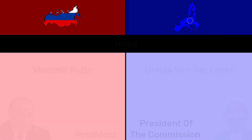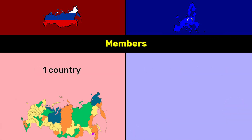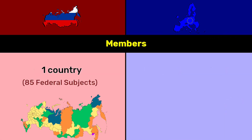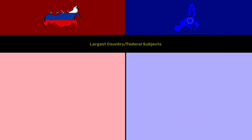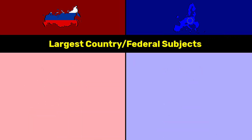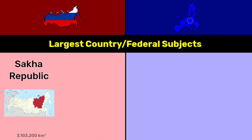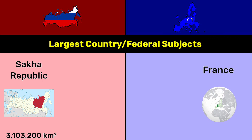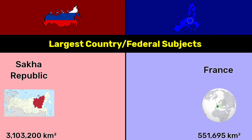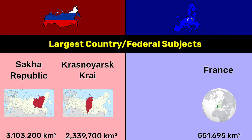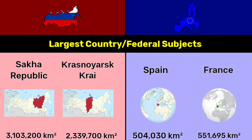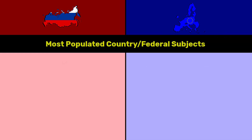Members: Russia is one country with 85 federal subjects; the EU has 27 countries. Largest divisions: Sakha Republic at 3.1 million square kilometers versus France at more than 551 thousand square kilometers. Krasnoyarsk at 2.33 million square kilometers versus Spain at 504 thousand square kilometers.